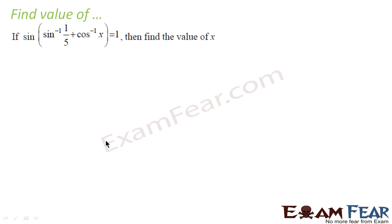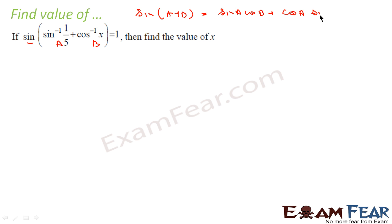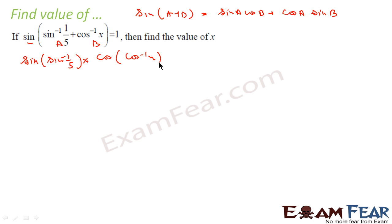To solve this and find the value of x, you can see the formula — this is nothing but sine of (a + b). Sine of this guy is a and this guy is b. For this we know the formula: sine of (a + b) is nothing but sin(a)cos(b) plus cos(a)sin(b). Let's break this and try to convert everything into sine form or cosine form.